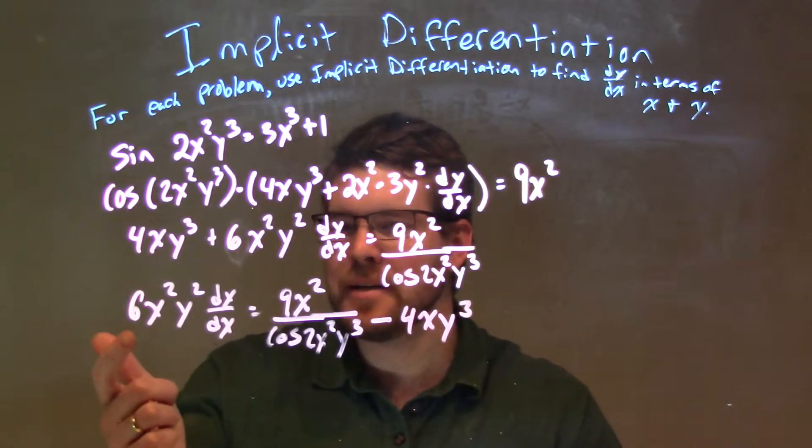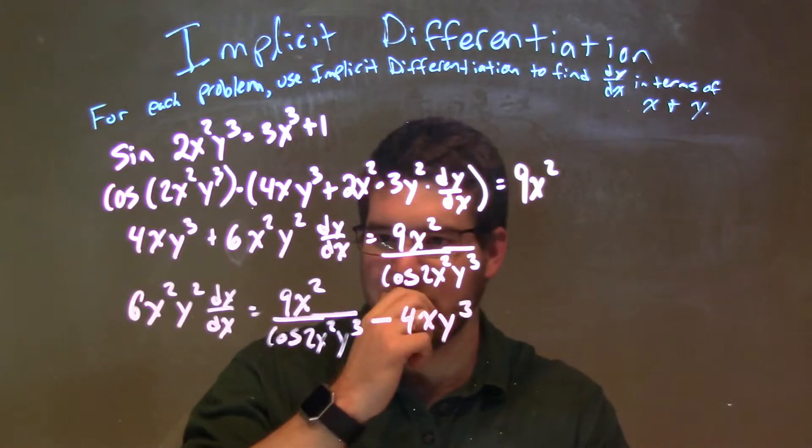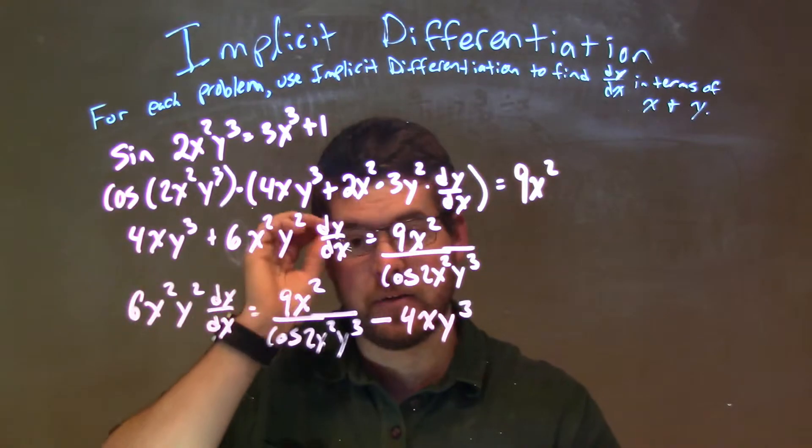Lastly, we want to divide 6x squared y squared on both sides to get dy/dx by itself.